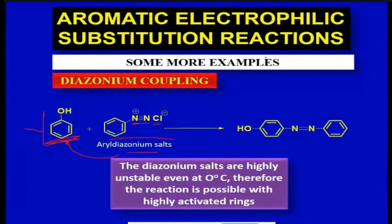If you have electron donating groups that activate the ring towards electrophilic substitution reaction, here you can see that we have phenol. Phenol has an oxygen that can be involved in mesomeric effect.